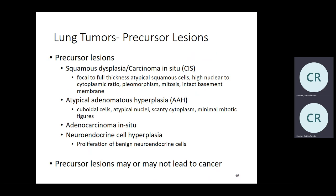We'll talk about neuroendocrine cell tumors today. You can have neuroendocrine cell hyperplasia. If you have a small tumor of neuroendocrine cells about three millimeters, no mitosis, no necrosis — a tiny, small area — if it's multifocal it's called a tumorlet. Is it malignant? No, this is a benign entity. If it is six millimeters — the same histology — it's called a carcinoid tumor. So the classification is largely based on size criteria.